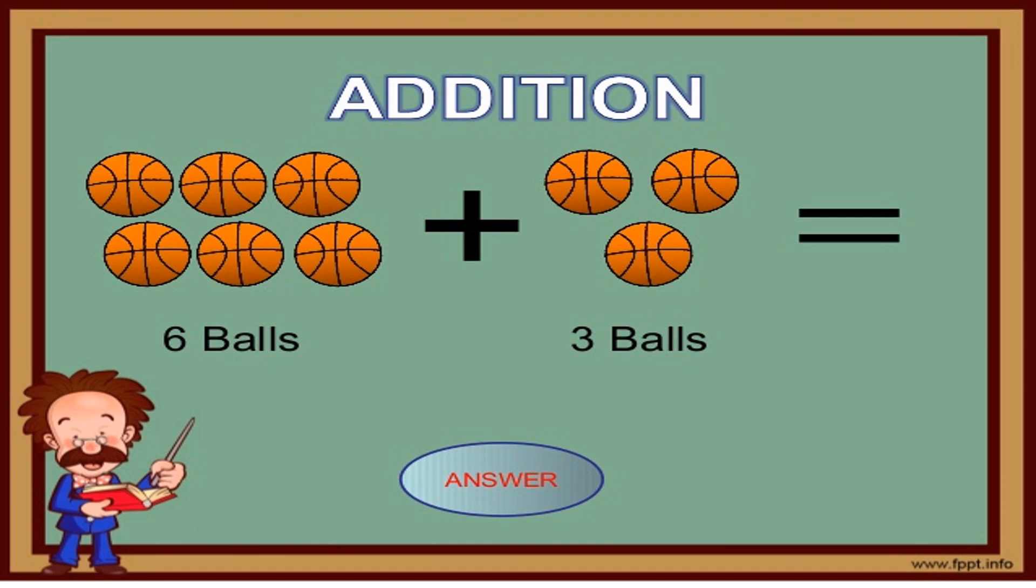Which one is the greater group? The group of six balls. The group of six balls is greater than the three balls. So put six in your mind and three on your fingers and count the three more. After six, seven, eight and nine. Great! So six plus three equals nine. Perfect!